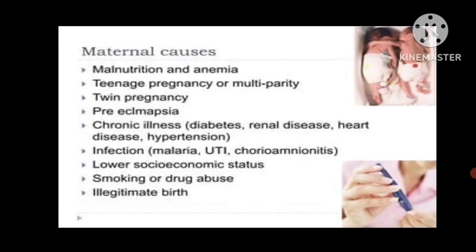Maternal and delivery causes include malnutrition, anemia, teenage pregnancy, multiparity, twin pregnancy, pre-eclampsia, chronic illness such as diabetes, renal disease, heart disease, hypertension, and infections which may include malaria, urinary tract infection, chorioamnionitis, lower socioeconomic status, smoking or drug abuse, and illegitimate birth.